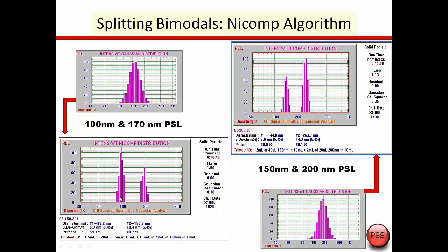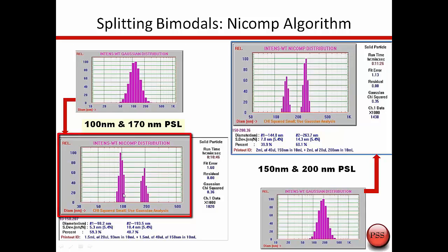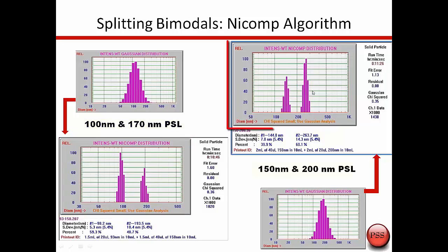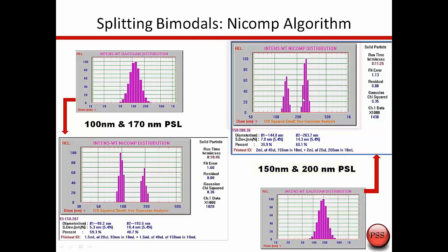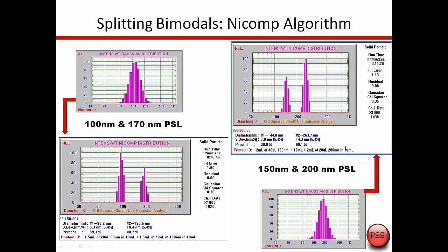If you look at taking two polystyrene latex standards that are 100 and 170 nanometers, using a Gaussian distribution you'd just create a smooth curve between the two. But using the NICOMP distribution, we can actually split these two peaks. We believe we have the most sensitive algorithm for splitting peaks that are fairly close to each other — here splitting PSLs at 100 and 170nm, and here 150 and 200 nanometers into their individual peaks.